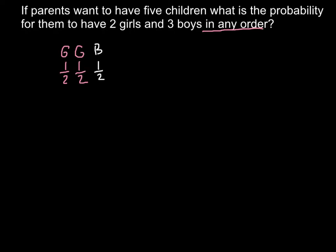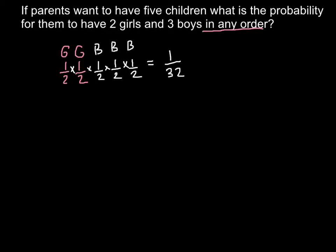Because there are only two possibilities — each new child can be either a boy or a girl, and the chances are equal. So what are the chances that the fourth child would be a boy? Once again, one half. And what are the chances that the last child would be a boy? Once again, one half. So what are the chances to have such a combination? We just multiply all these independent events, and the answer is 1 over 32.